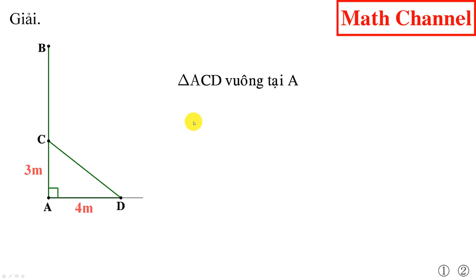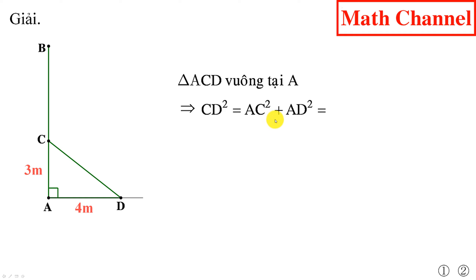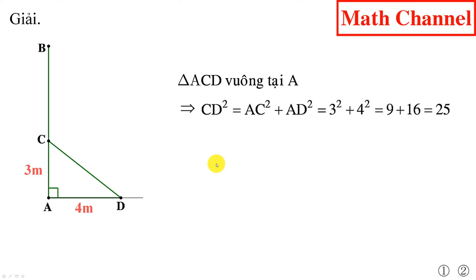Cụ thể, tam giác ACD vuông tại A. Từ đây chúng ta suy ra CD² = AC² + AD². Thay số vào tính toán thì chúng ta được kết quả là 25. Từ đây chúng ta suy ra đoạn CD có độ dài là 5m.